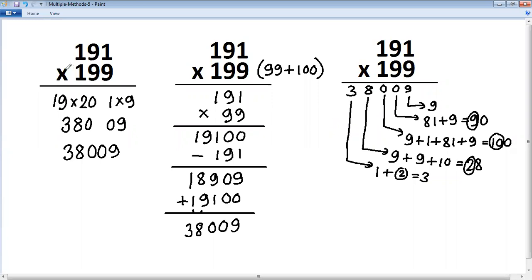We have solved this one problem in three different methods. This is a special case. This is series of nine. And this is crisscross. So three different methods for the same problem, 191 multiplied by 199.